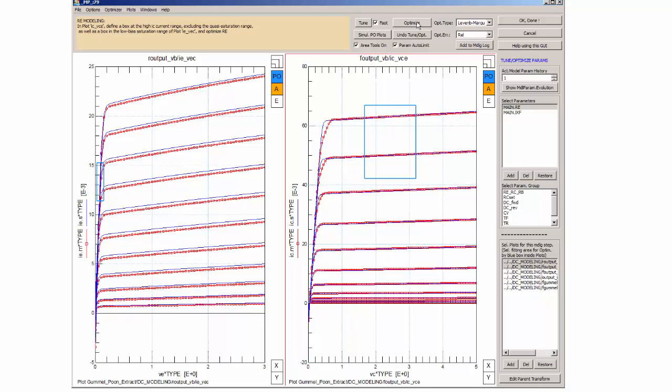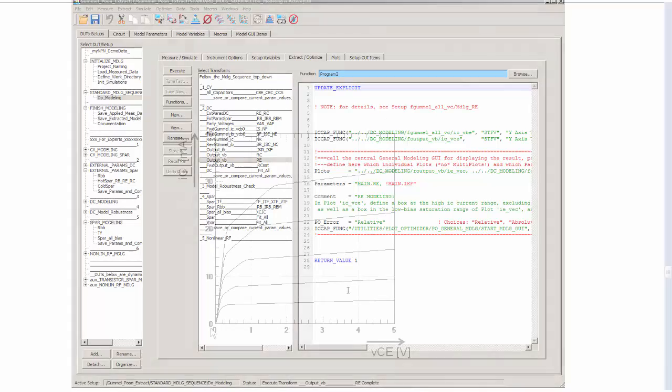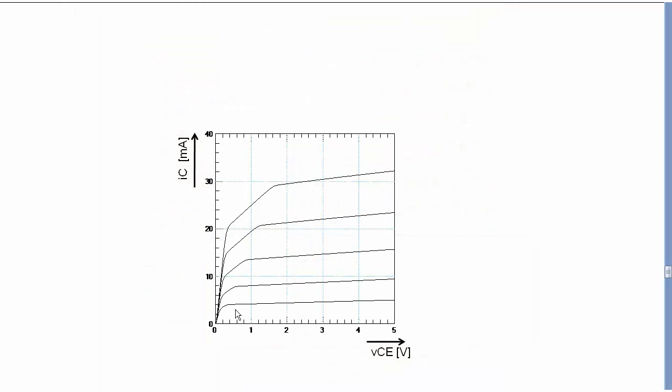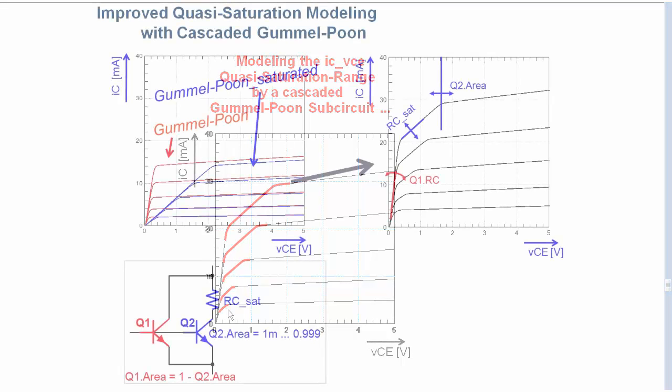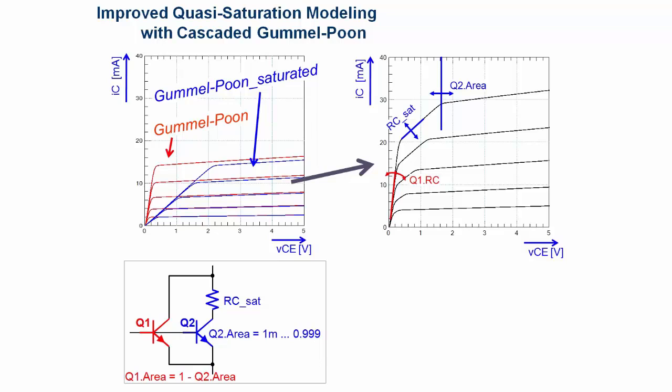There is still a slight mismatch in the forward output characteristics in the quasi-saturation range, due to the limitations of the Gummel-Poon model. I will show you now a trick how we can improve the fitting in this quasi-saturation region and still keep using the Gummel-Poon model.